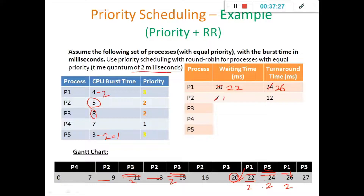So the waiting time for P2 is 11 milliseconds. Its completion time — P2 completed at 16 milliseconds, so the turnaround time of P2 is 16. Now let us look into process P3: it waited until 9 milliseconds and then got its turn from the CPU, used it for 2 milliseconds, then waited for 2 milliseconds again because it was switched over to process P2 due to round robin scheduling.